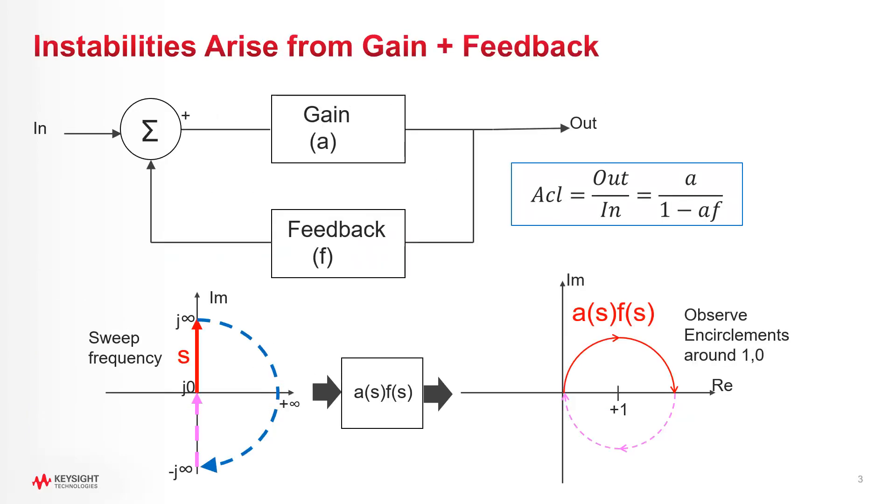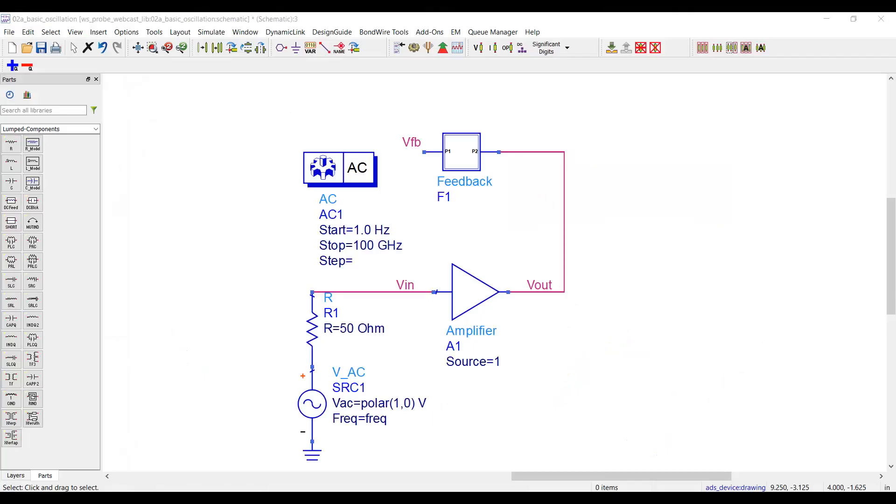Alright, in the last video, I showed how amplifier and feedback blocks can be connected together to form a feedback system. And the key to whether that system is stable or not depends on the combination of the amplifier and feedback, which is called loop gain. If this loop gain circles clockwise around 1+0 on a polar plot, the system will essentially be unstable. And I showed an example last time of an amplifier and feedback block that were unstable.